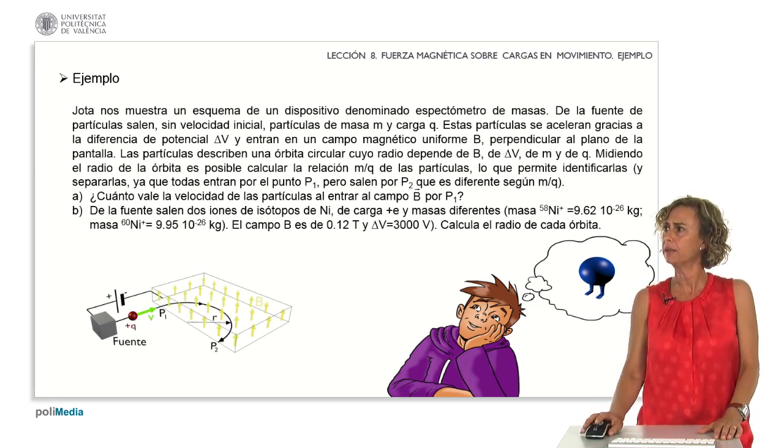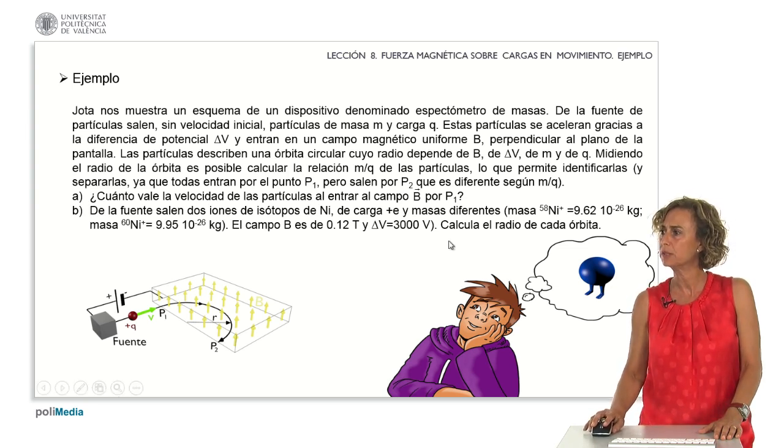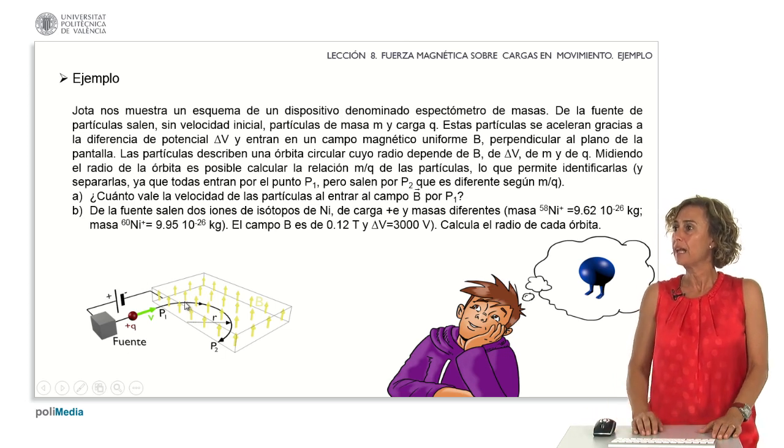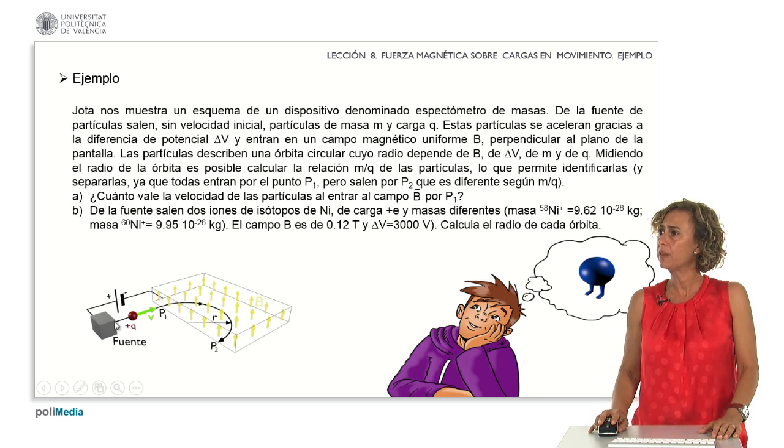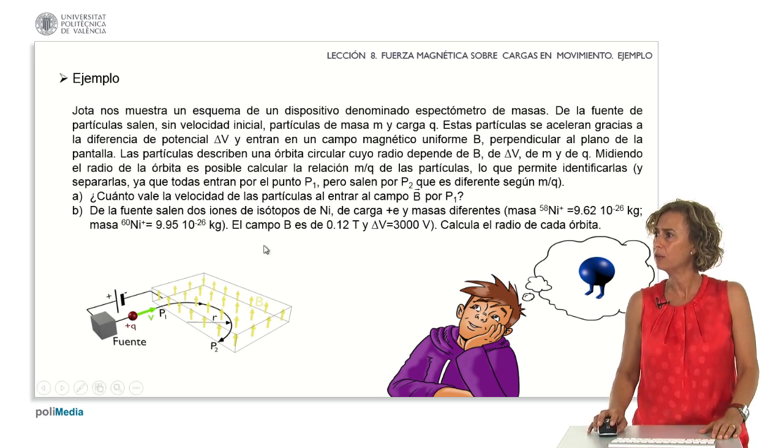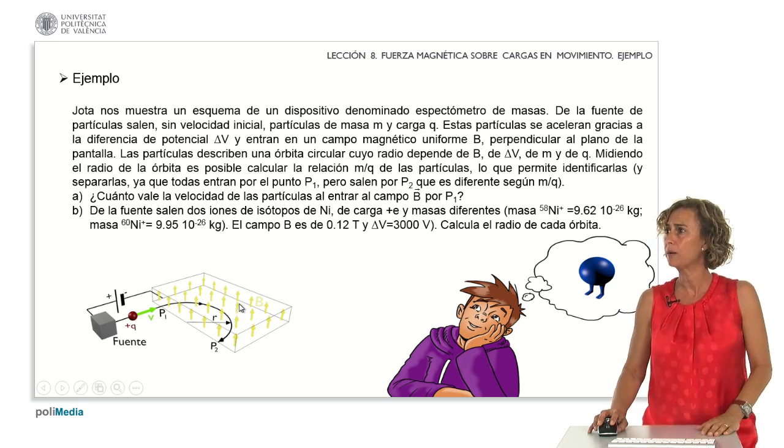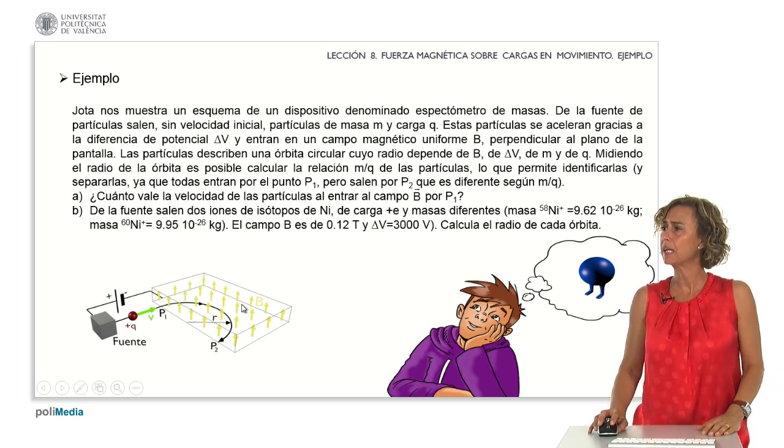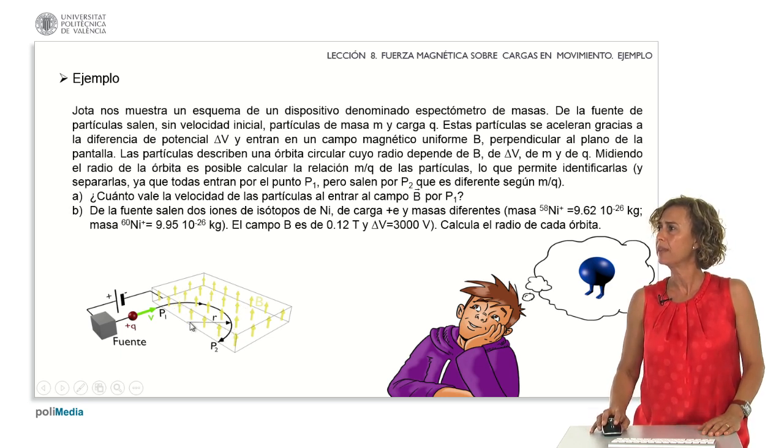Jota is presenting a schematic of a device known as a mass spectrometer, depicted right here. Particles of mass m and charge q come out of the particle source without initial velocity. These particles are accelerated by the potential difference delta V and enter a magnetic field shown here, which directs upwards perpendicular to the plane of the screen.